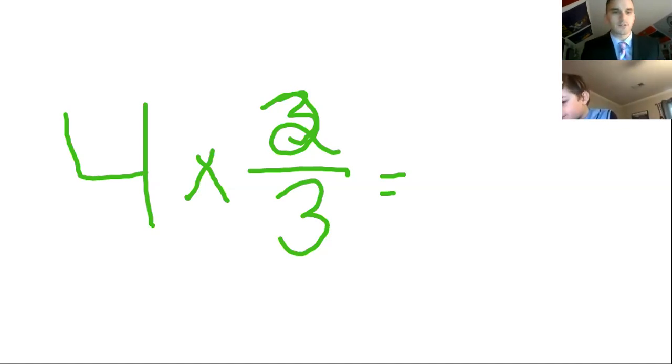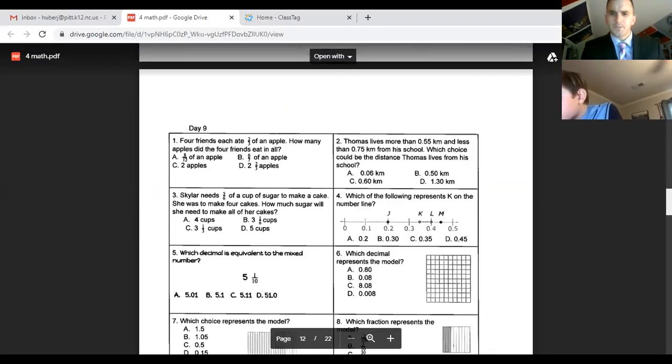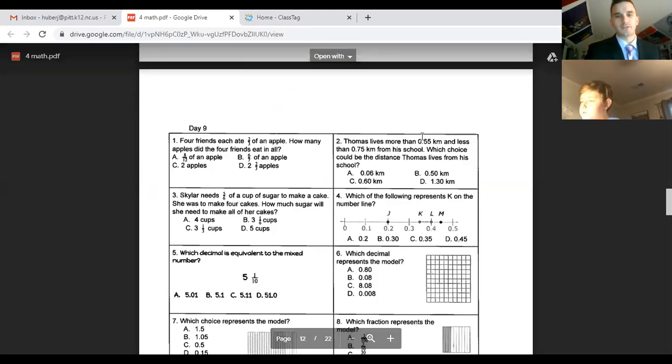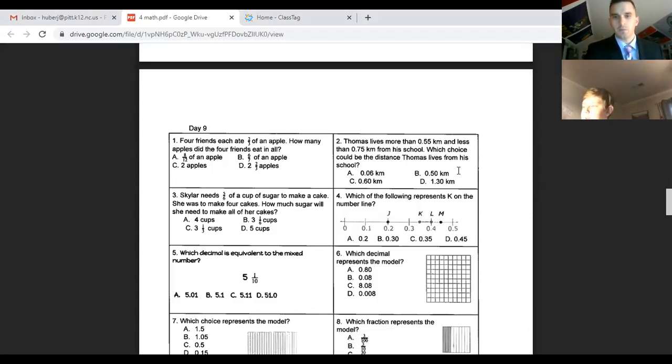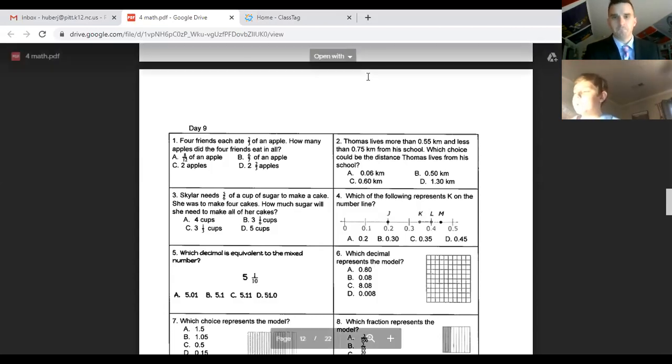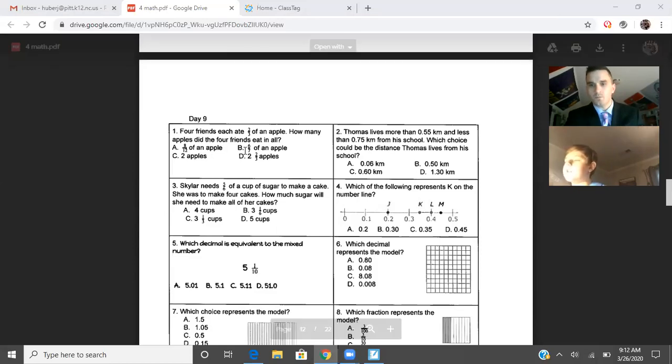Let's move over across to number two. And there was one like this, I think, yesterday. It says, Thomas lives more than fifty-five hundredths of a kilometer and less than seventy-five hundredths of a kilometer from his school. Which choice could be the distance Thomas lives from his school? So, Tristan, what did you say was your answer here and why? It wouldn't be A because that's less than fifty-five. It wouldn't be B because it's less than fifty-five. It would be C because it's bigger than fifty-five but not smaller than, well, it's smaller than seventy-five.